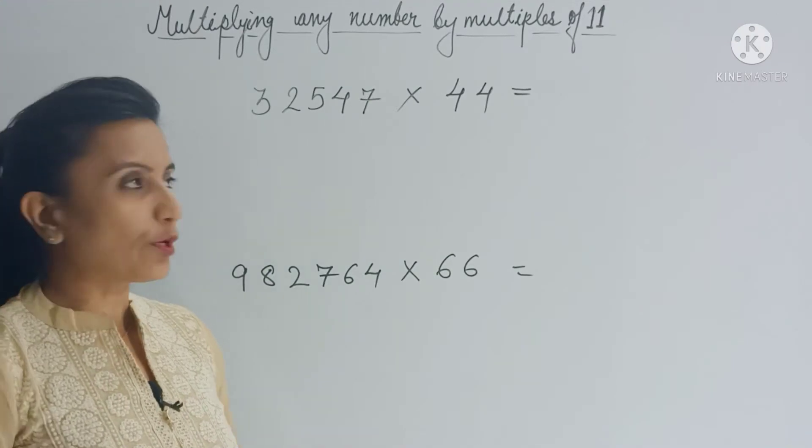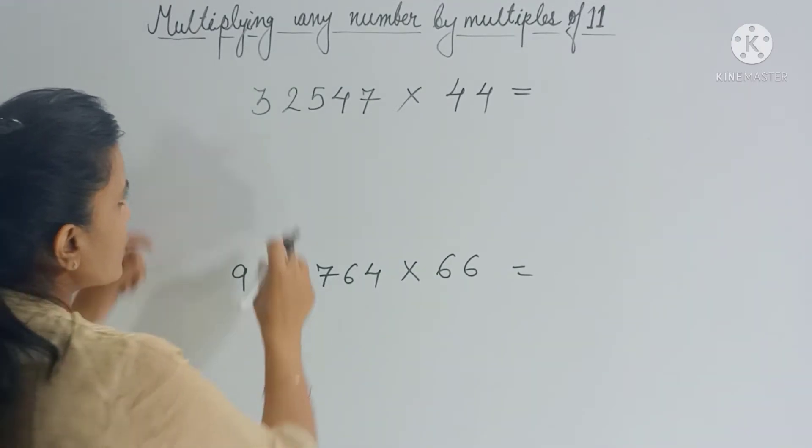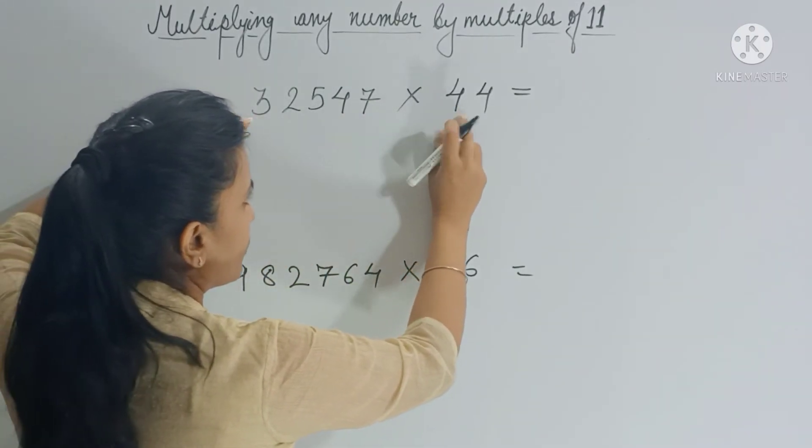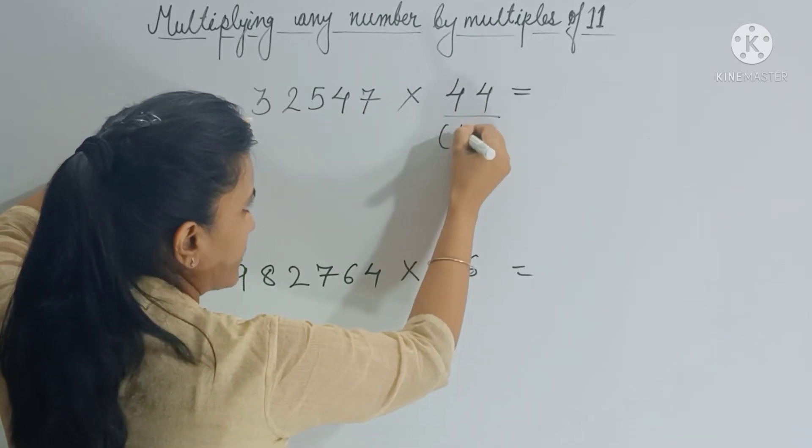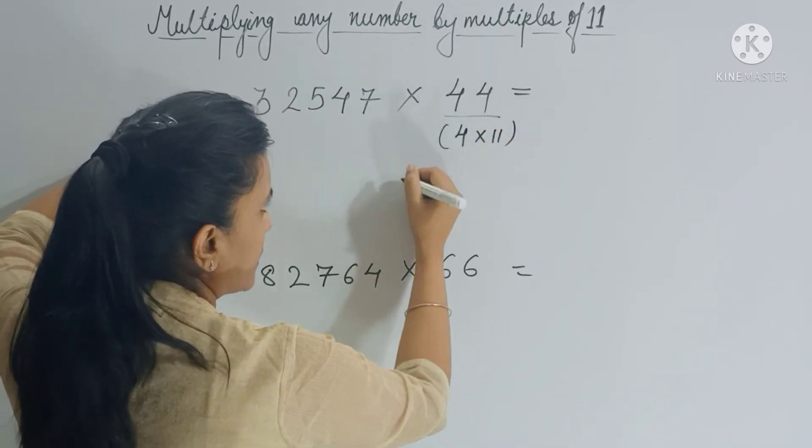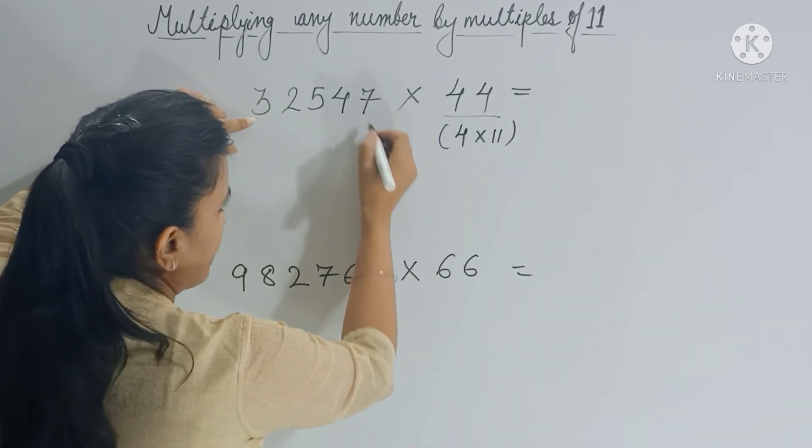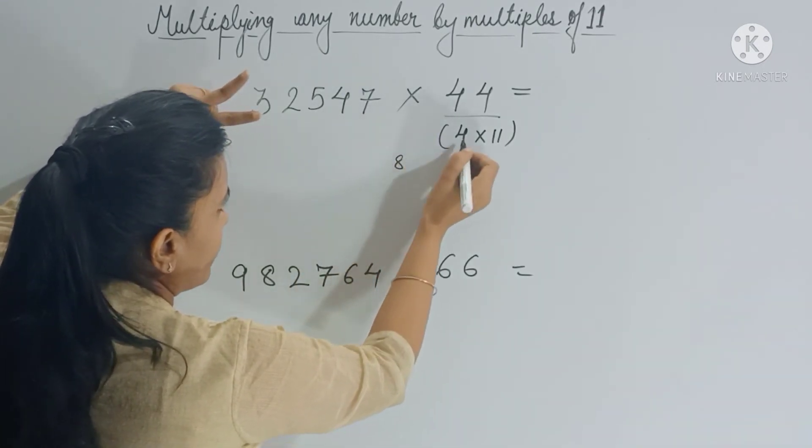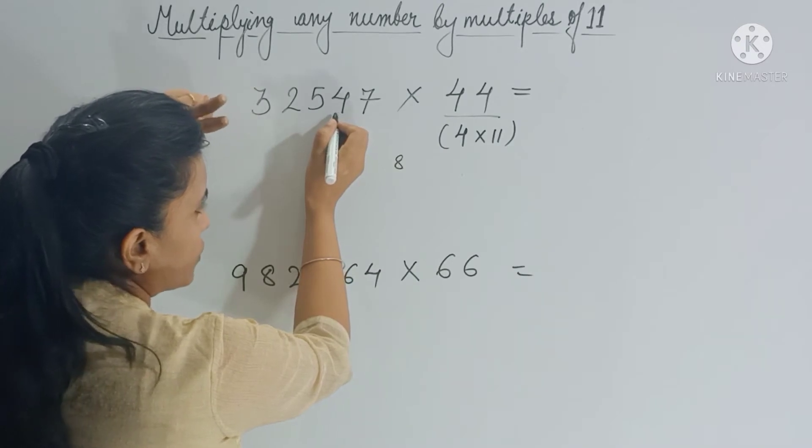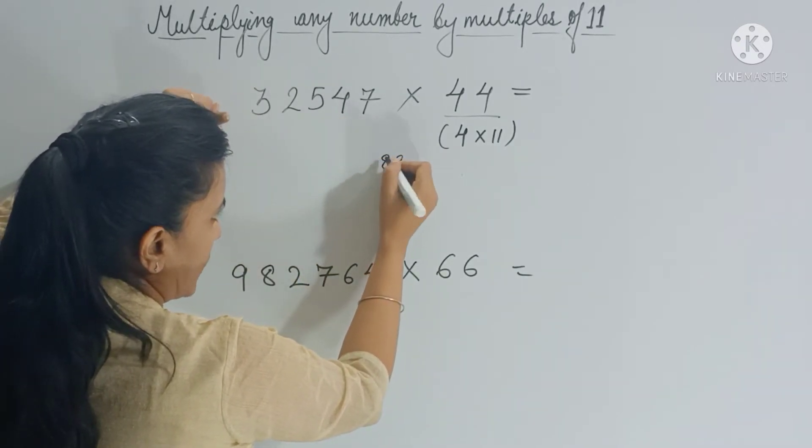Alright, let's see a few more problems. So here we have to multiply this number by 44. So 44 I can write as 4 multiply 11. So first you have to multiply this number by 4. So 4 times 7 is 28, 2 is carry forward. 4 times 4 is 16 plus 2 is 18, so 1 is your carry forward.